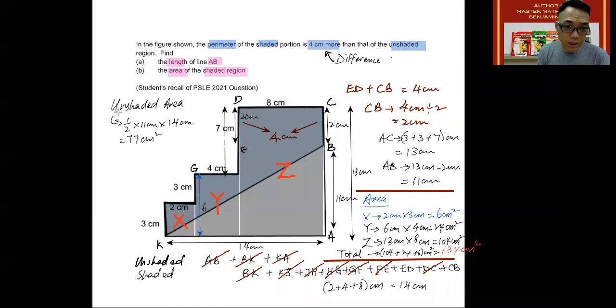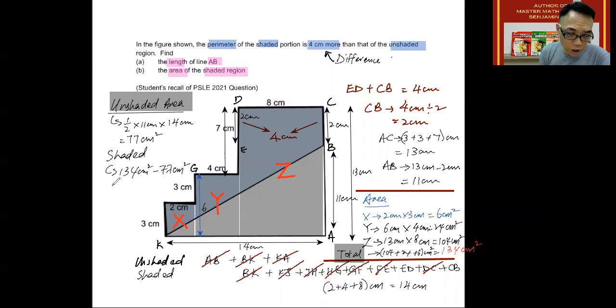And with the shaded, the unshaded area and the total area found, I am now ready to find the shaded area. And to do that, all I need to do is subtract. So I'm going to take the area of the entire figure and subtract the area of the unshaded portion. So the total minus the unshaded, which is 134 minus 77, which I've just written. And let's do that in the calculator. And that gives me 57 square centimeters. And that is the answer for part B.